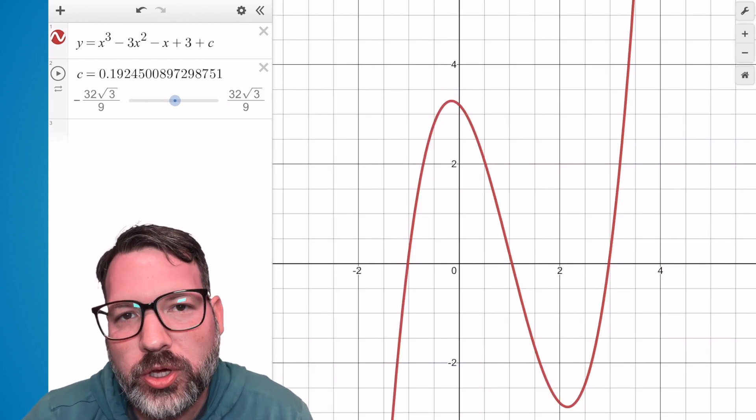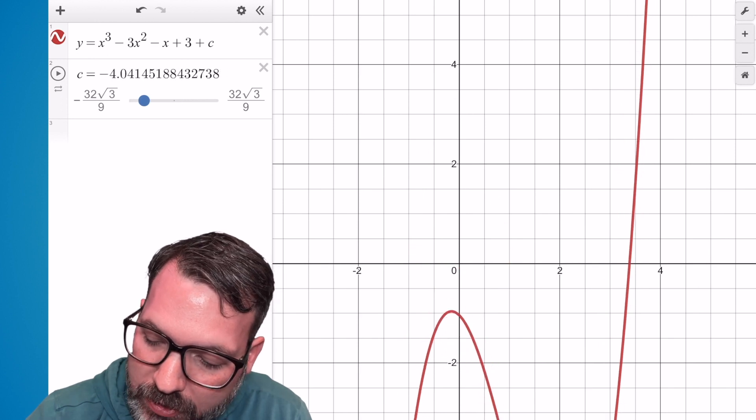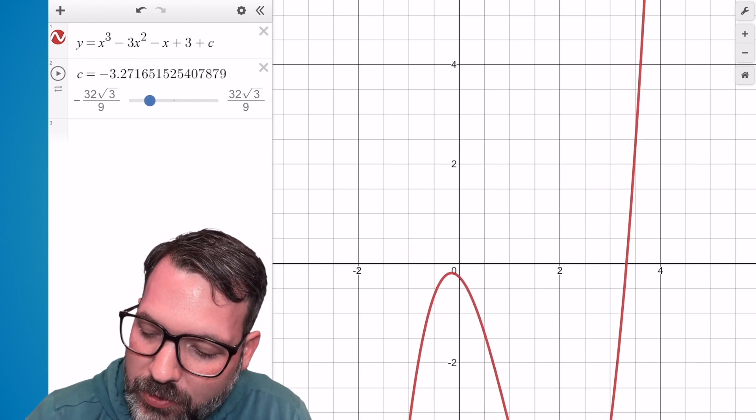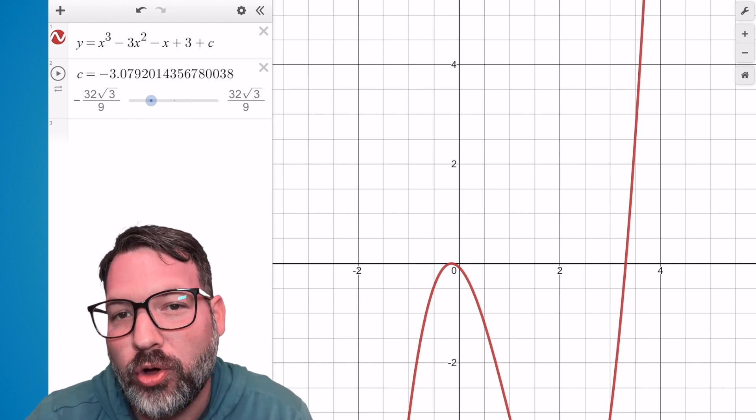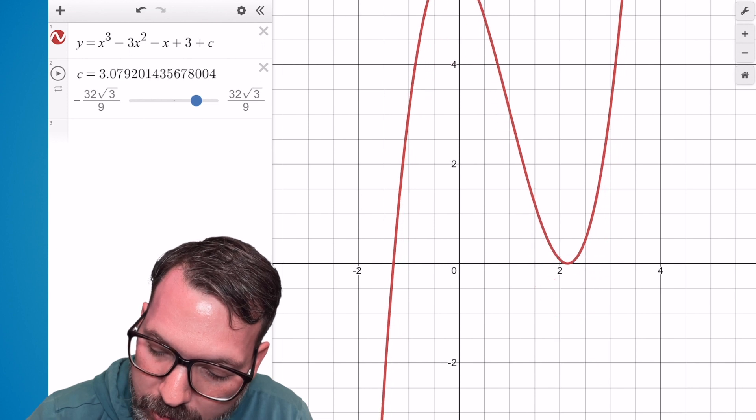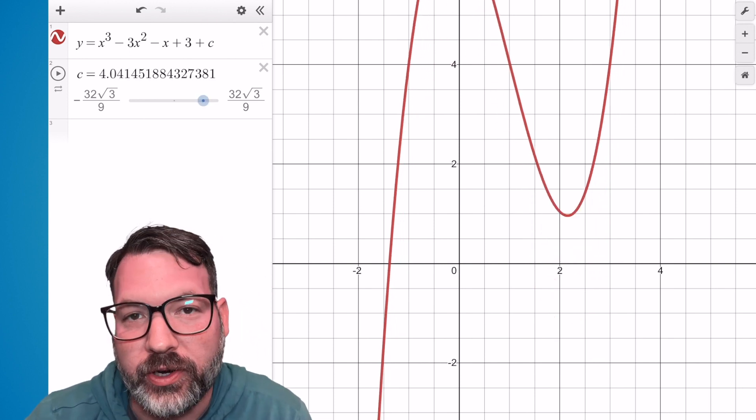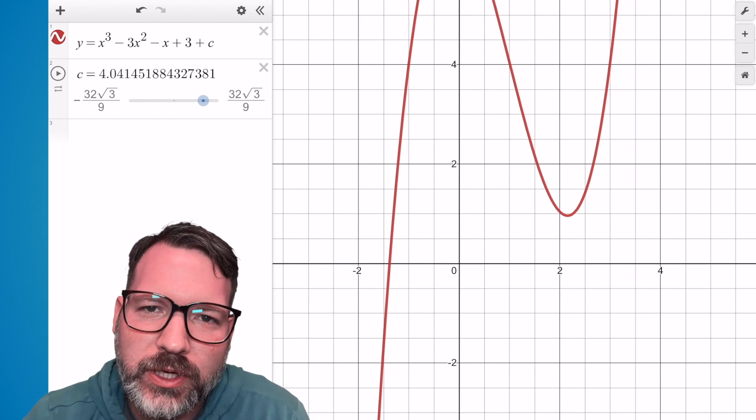We can do the same thing with this cubic that I started looking at. We can push it down to the point where we get just the one real solution, we can push it up to a point where we get two intersections rather than all three. Of course we can see three intersections, and if we continue pushing it up, we get once again two intersections, and eventually just one intersection. So what's going on? Where are these real solutions going?